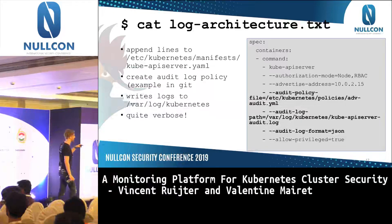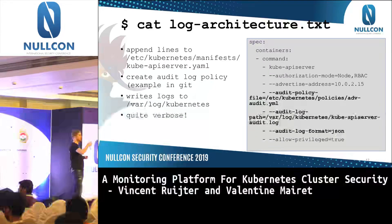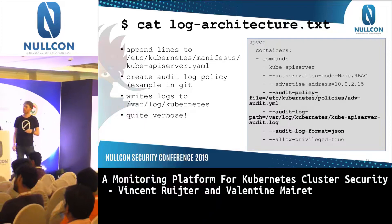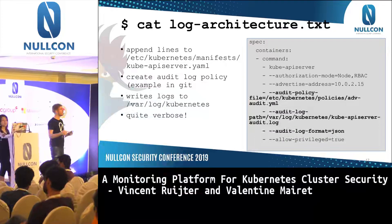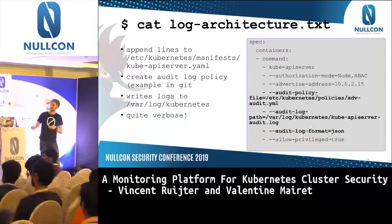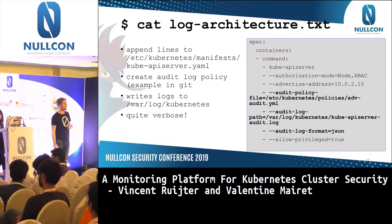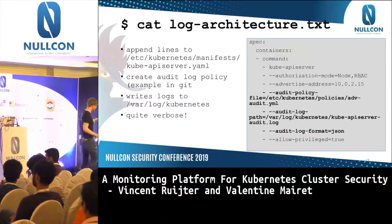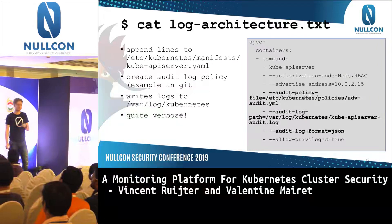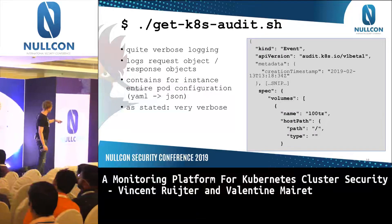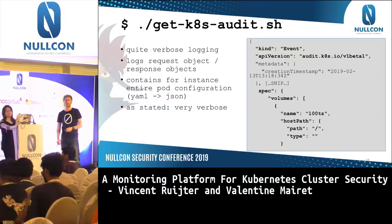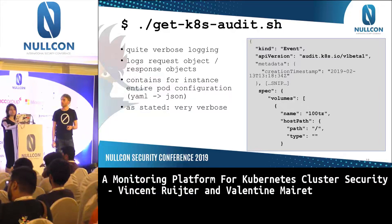Now we talk a bit about our logging architecture. First we need to enable audit logging. In Kubernetes there's an API server where all requests are routed through, and you can enable audit logging by adding the following lines to the configuration — this tells Kubernetes to start auditing and save everything in a JSON file. The JSON file is very verbose. You also need to create a host mount to /var/log on the nodes, and then the Fluentd configuration will get the log files from that directory. The logging even caches requests and responses, so you can see what is allowed and what's not allowed.